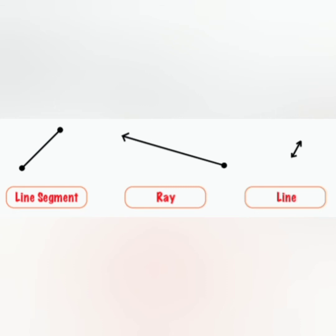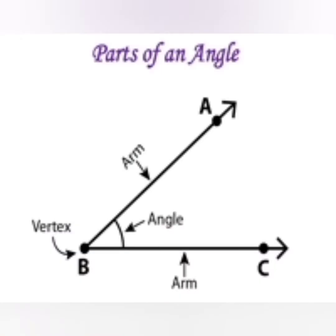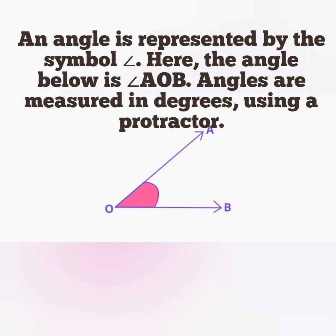Now let us see about the angles. Now coming to angles. The point where the rays meet is called the vertex and the rays are the arms of the angle. This is the symbol used to represent an angle. Here the angle is angle AOB.